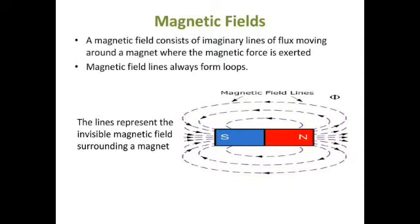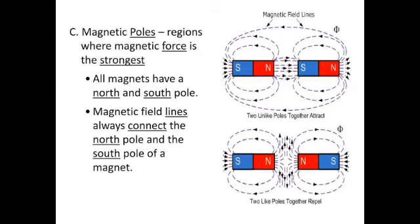Any bar magnet has its magnetic field. A magnetic field consists of imaginary lines of flux moving around the magnet where the magnetic force is exerted. Magnetic field lines always form loops — in this picture we can clearly see the loops around a bar magnet. With our naked eye we cannot see the field, but when you bring two north poles together, you can feel something pushing away — that is the magnetic field.